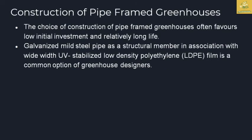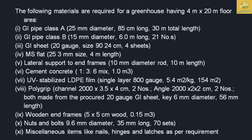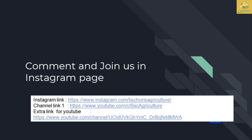For pipe-framed greenhouses, the choice often favors low initial investment and relatively long life. Galvanized mild steel pipes as structural members, in association with wide-width UV-stabilized low-density polyethylene (LDPE) film, is a common option for greenhouse designers. The material requirements for greenhouse construction include hoops, foundation, lateral supports, poly grip assembly, and end frames. I have listed the specific materials required for a greenhouse of 4 meter by 20 meter floor area in the lecture notes for your reference.